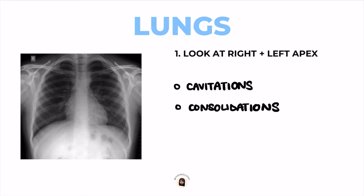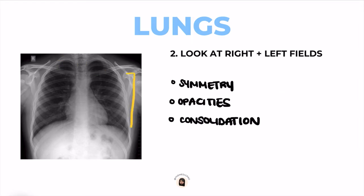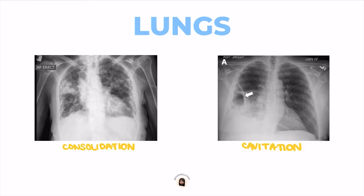Now let's move on to the lungs. We'll analyze from the top to the bottom so we don't miss any parts. Start with the apex — check the right and left apex for any cavitation in the case of TB, or consolidation, which is essentially fluid. Then move on to the lung fields: check for symmetry, any opacities, or consolidation. Consolidation is fluid within the lungs — whether that's blood, pus, or inflammatory material — it shows up as whitish areas on the x-ray.